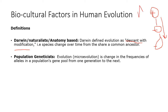This descent with modification in every lineage leads to evolution. For example, Australopithecus, Homo habilis, and Homo erectus are all different in their anatomy — in their bone structure, hand bone structure, leg bone structure, and cranial bone structure. This difference across generations is what descent with modification means.